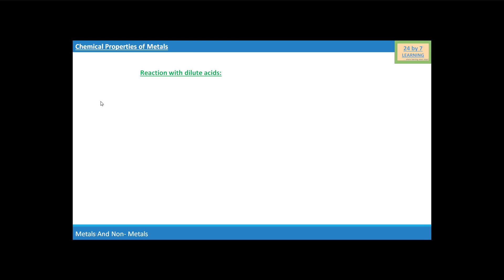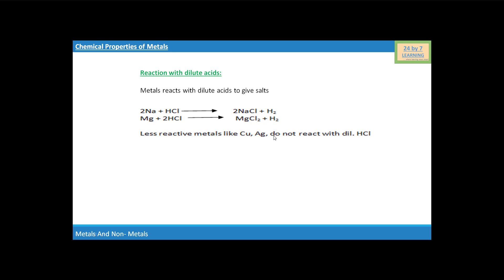Now we will see the reaction of metals with dilute acids. Metals react with dilute acids to give salts. When sodium reacts with HCl, i.e. hydrochloric acid in dilute form, the reaction will yield NaCl, i.e. sodium chloride — it is a salt.